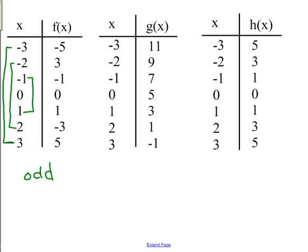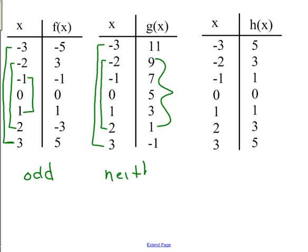For the next function G of X, G of negative 3 gives 11 and G of 3 gives negative 1 — there's no nice relationship between negative 1 and 11, so this one is neither. The last function turns out to be even: negative 3 gives output 5, and 3 also gives output 5 — opposite inputs give the same output. Similarly, negative 2 and 2 both give 3, and negative 1 and 1 both give 1. So this one is indeed even.